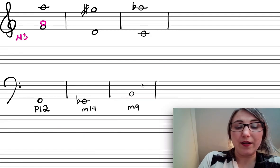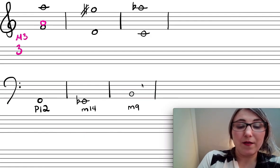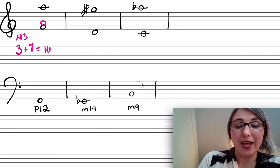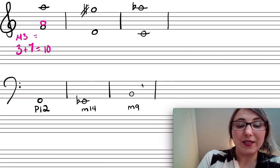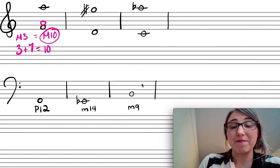So the compound version then is going to be 3 plus 7 which would be 10 therefore this is a major 10th. Keep the quality the same, add 7.